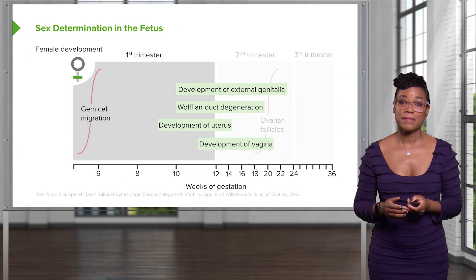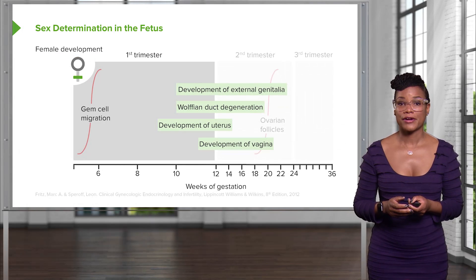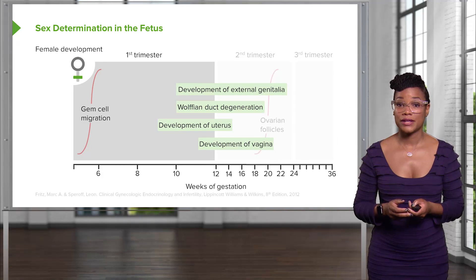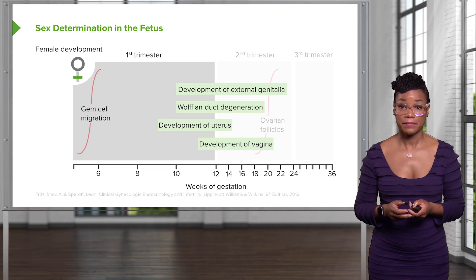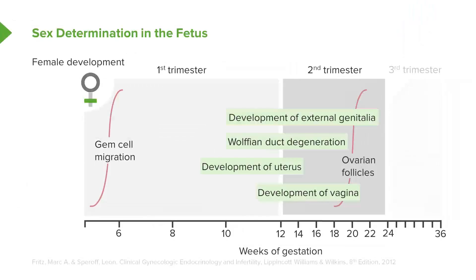In the female fetus, during the first trimester, germ cell migration occurs, and there is development of the external genitalia. The Wolffian ducts should degenerate, leading into the second trimester, where there is development of a uterus and vagina.